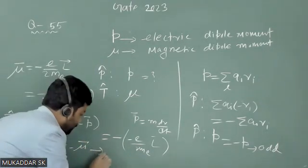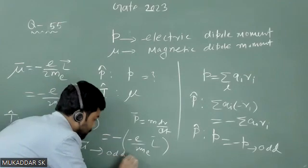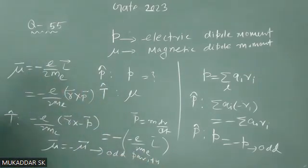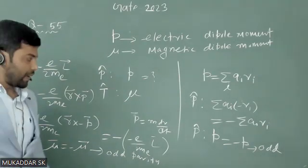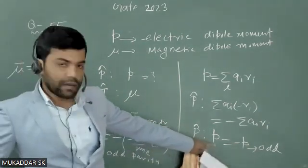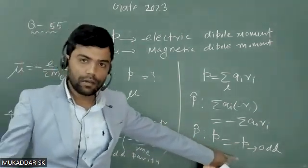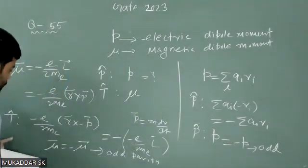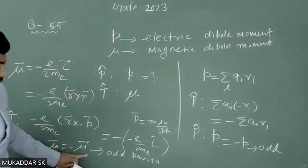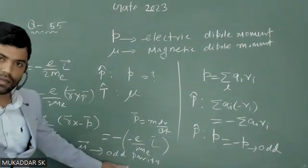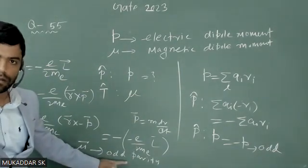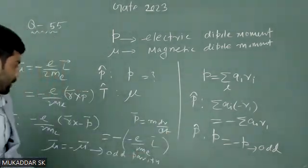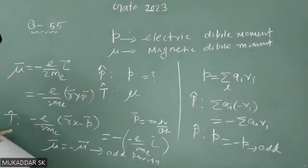Again, it will show odd parity. So under the parity operation the electric dipole moment shows odd nature, and under time reversal the magnetic dipole moment also shows odd nature. Both are showing odd nature — one under parity and the other under time reversal.